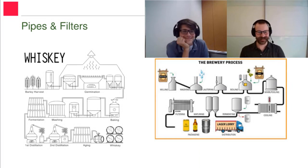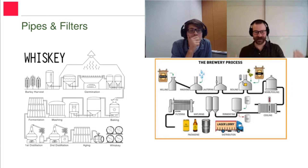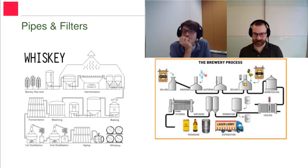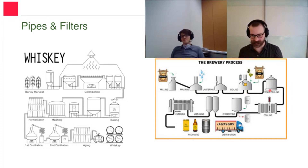Thinking of pipes and filters, consider a whiskey distillery: we have multiple processing steps — the harvest of the barley, then germination, baking the barley, milling, mashing, fermentation, and so on. Similarly, the beer brewing process also has these processing steps, where results get pumped into the next chamber. You brew or boil the mash in the mash tun, and it gets pumped into the next chamber, and so on. This is pipes and filters.